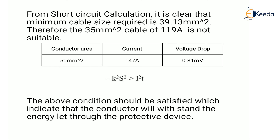Since the 35 mm² cable does not satisfy the short circuit condition, we select the next higher value from Table 15: conductor area 50 mm², current carrying capacity 147 A, and voltage drop 0.81 mV/A/m. This will satisfy the condition, indicating that the conductor will withstand the let-through energy of the protective device.